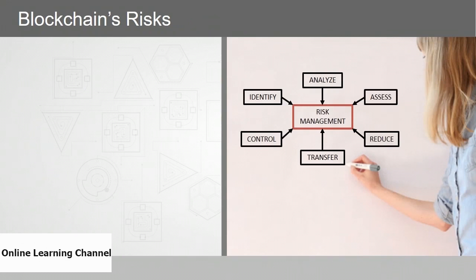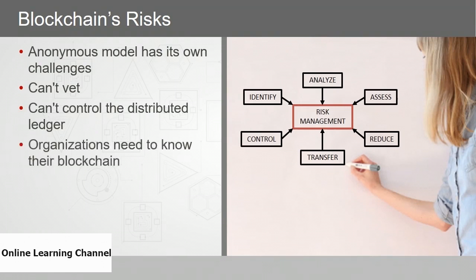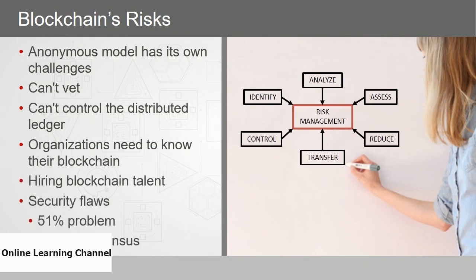The risks associated with blockchain include: the anonymous model has its own challenges — it's difficult to vet users on a public blockchain, you can't control the distributed ledger, organizations need to know their blockchain, hiring blockchain talent is difficult, and there are potential security flaws, specifically the 51% problem — what I call the consensus of lies.